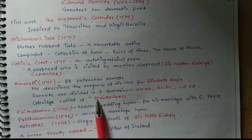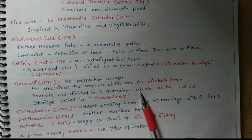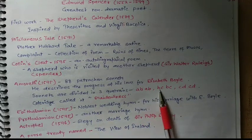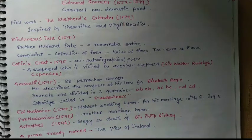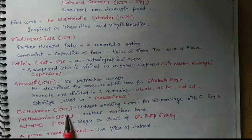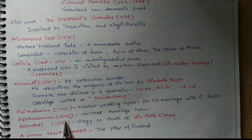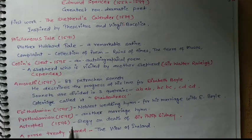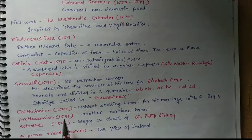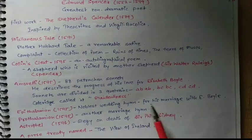In Amoretti, the sonnets are divided into three quatrains with the rhyme scheme ABAB BCBC CDCD. Epithalamion was published in 1595, and Prothalamion was also published in 1595. Astrophel was published in 1596.